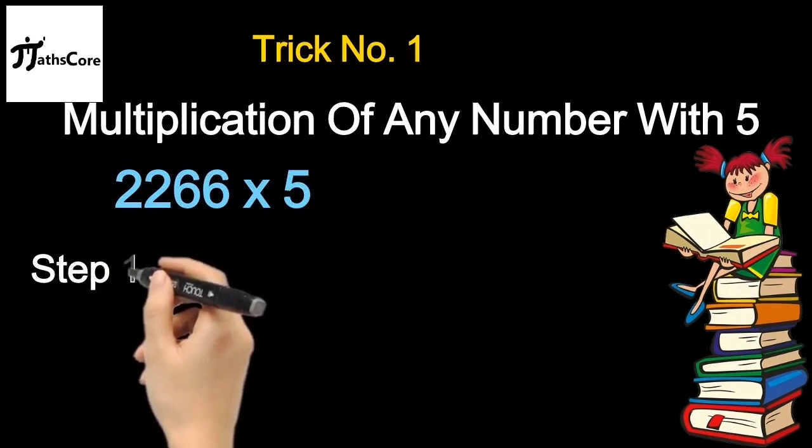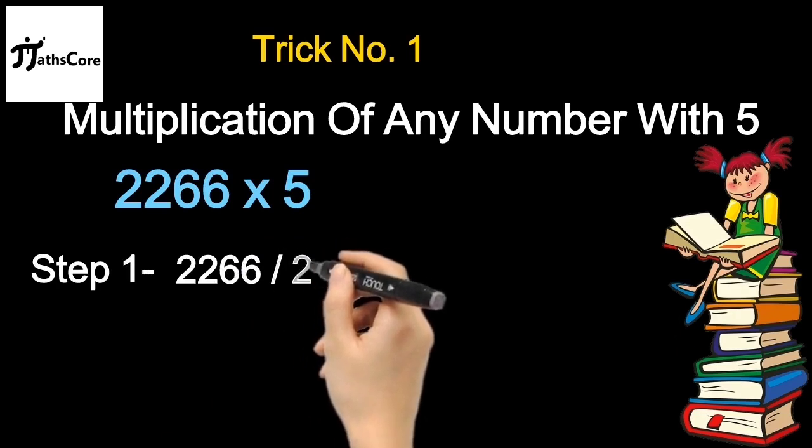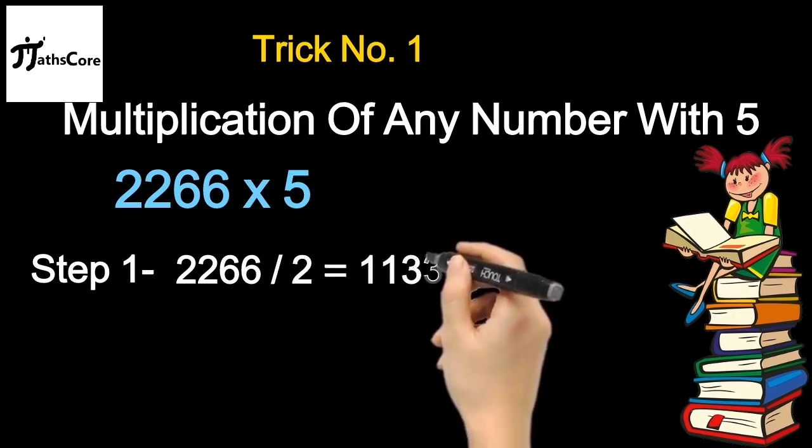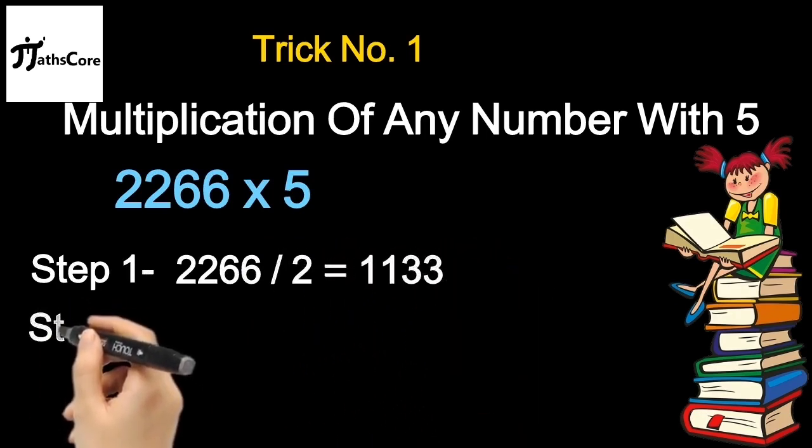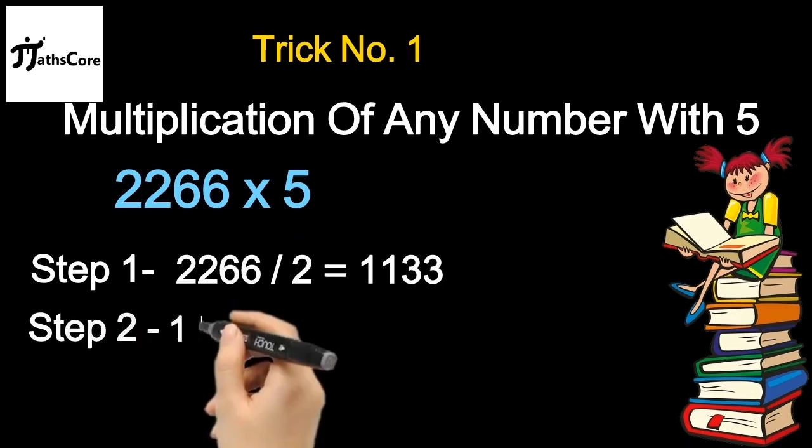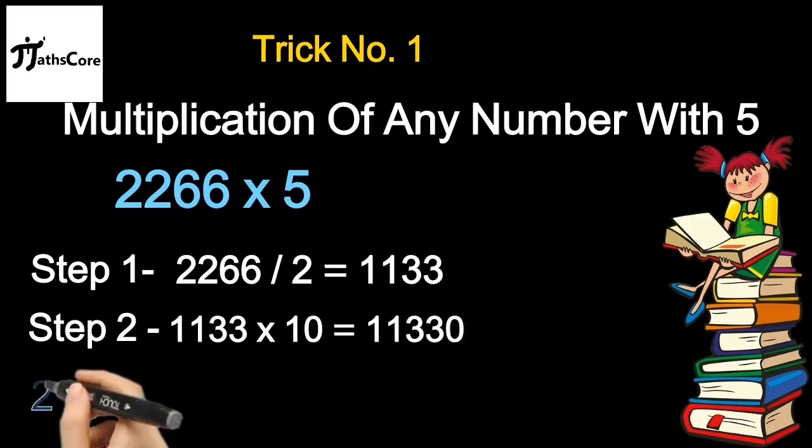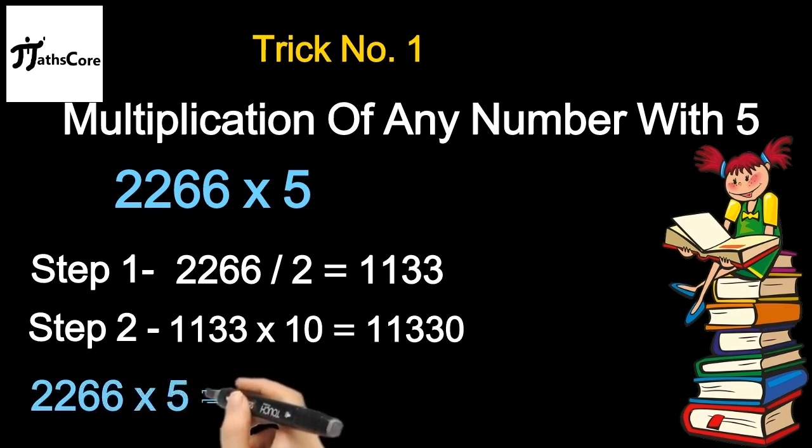In the first step you need to divide the given number by 2. So 2266 divided by 2 equals 1133. And now in the second step you need to multiply this 1133 with 10. So 1133 multiplied by 10 equals 11330. And this is your answer: 2266 multiplied by 5 equals 11330.